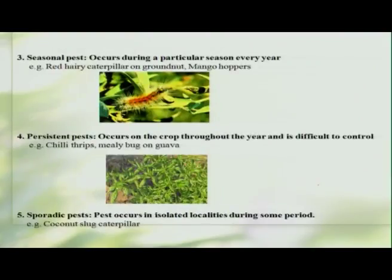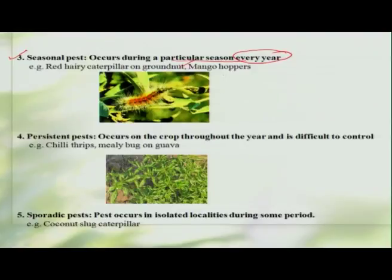Some insects are referred to as seasonal pests — these pests will occur during a particular season every year. A good example is the red-headed hairy caterpillar on groundnut or peanut, and sometimes mango hoppers. Whenever groundnut is grown especially during the monsoon season, this pest will occur on the crop and cause damage.